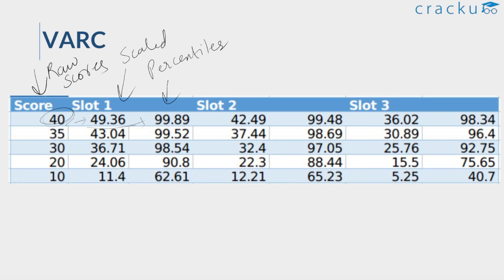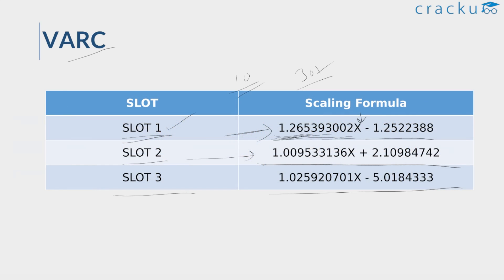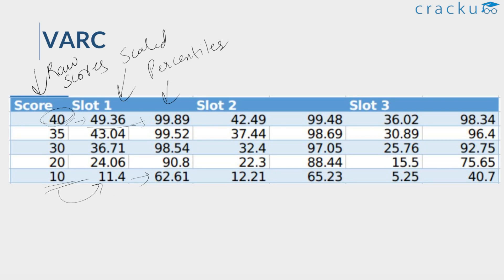Looking at the lower ranges: if your score was 10, the scaling is not as high. The scaled score was higher, but not by a great number — scaled up by just 1.4 marks, with a respective percentile of 62.61. For the Slot 2 VARC scaling formula, the scaling has been done based on this formula, and these are the respective raw scores versus scaled scores.